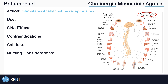So bethanachol stimulates or increases our body's rest and digest functions. The word muscarinic means that the drug is targeting the smooth and sometimes cardiac muscle in the body, such as the GI tract, the urinary system, or the eyes.